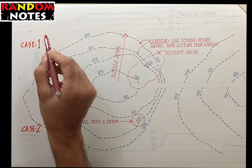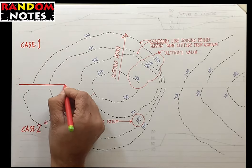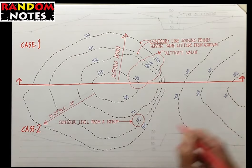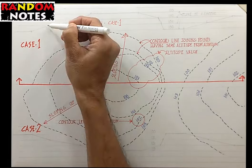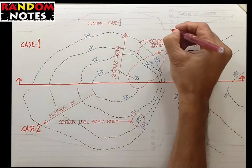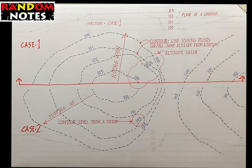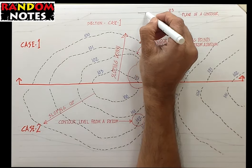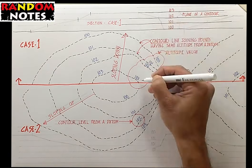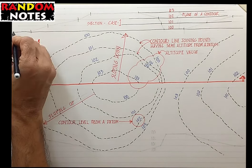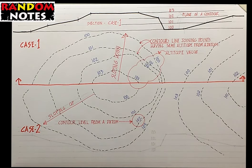Let us make a section through the contours for case 1. This is the section line cutting across the contours. Let us take projections up from these points, and we will make the planes for each contour in the section. These are the lines of planes of each level from 100 to 103. Let us take projections upwards from points where the contour is cut by the section plane. The meeting of these projections with their respective level planes will give us points to derive the profile of the land at the section plane.